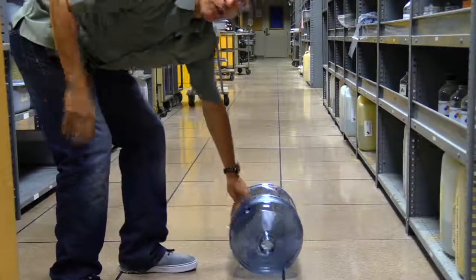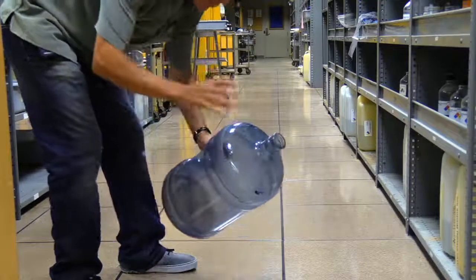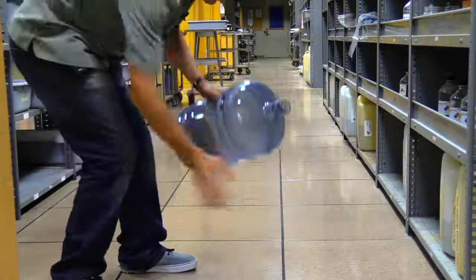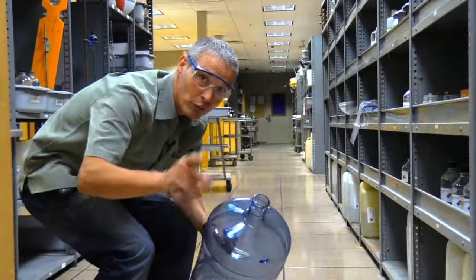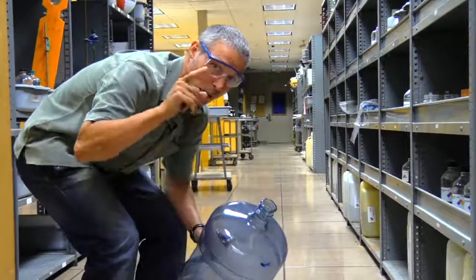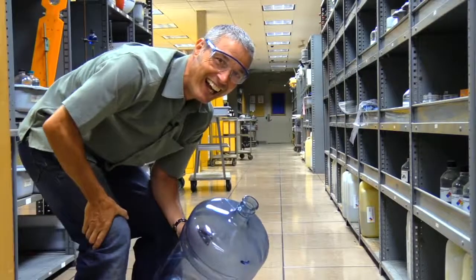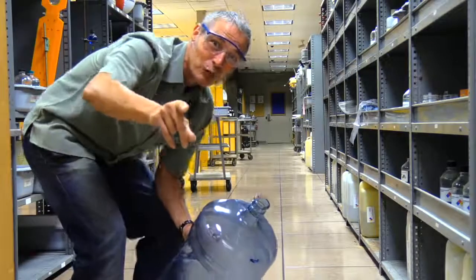Nothing. I kind of predicted that because 1-propanol has a really, really low boiling point - didn't even give it enough propulsion to move the thing. But 2-propanol, isopropyl alcohol, is the king of woosh bottling.